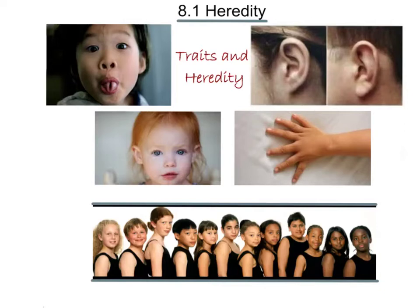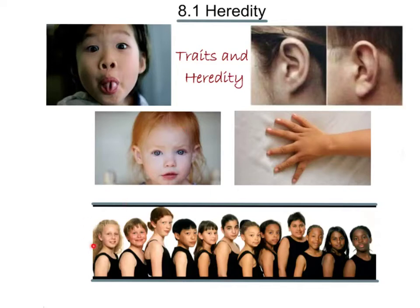Have you ever tried to roll your tongue? That is an inherited trait. Have you ever noticed that some people have unattached earlobes and some people's are attached? That's an inherited trait as well. Six fingers — that's an inherited trait also. Eye color and hair color are also inherited traits. Skin color, with all its different shades, is also an inherited trait, although it is not a simple inherited trait.